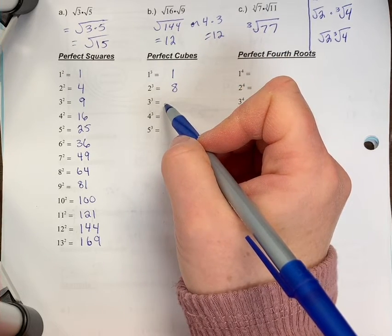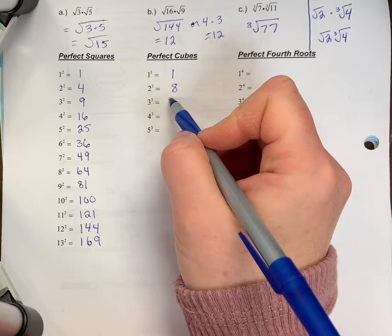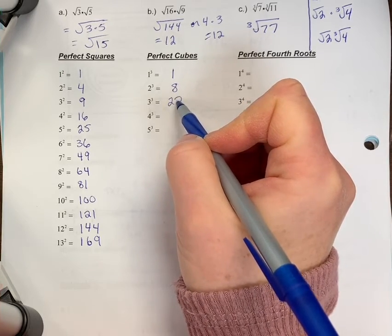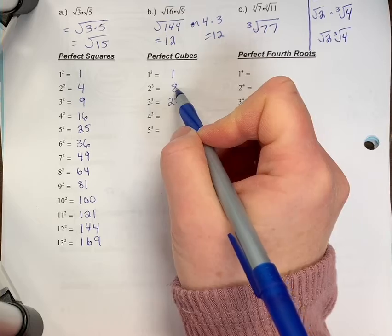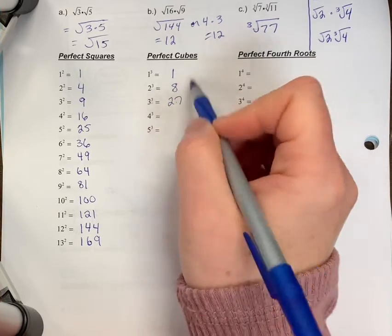Three cubed is three times three, so nine, nine times three is 27. So that means the cube root of 27 is three, the cube root of eight is two. So you need to know these without a calculator.